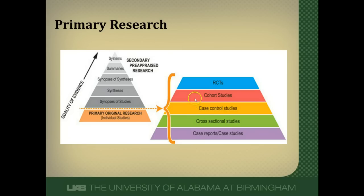These are two observational studies, which means we just observe what happens to people. We don't intervene as researchers and try to decide whether they get in one arm or the other — an exposed group or an unexposed group. The patients themselves have self-selected for this. So the problems with observational studies are a lot more biases and a lot more confounding that can be difficult to control for.